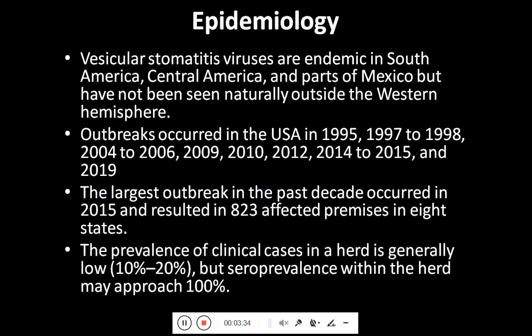The vesicular stomatitis virus is endemic in South America, Central America and parts of Mexico, but has not been seen naturally outside the western hemisphere. Outbreaks occurred in the USA from 1995 to 2019, and the largest outbreak in the past decade occurred in 2015, resulting in 823 affected premises across 8 states. The prevalence of clinical cases within a herd is generally low at 10 to 20 percent, but seroprevalence within the herd may approach up to 100 percent.